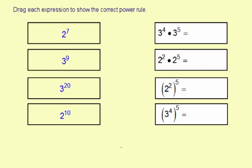Drag each expression to show the correct power rule. So this first one on the right is 3 to the 4th times 3 to the 5th.